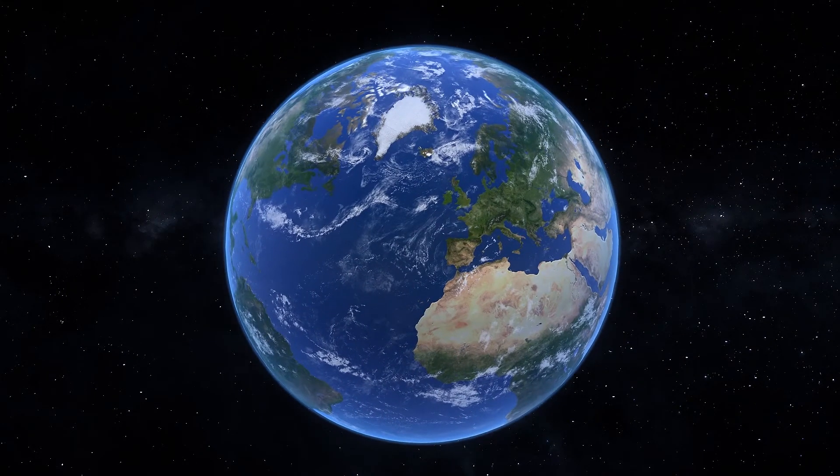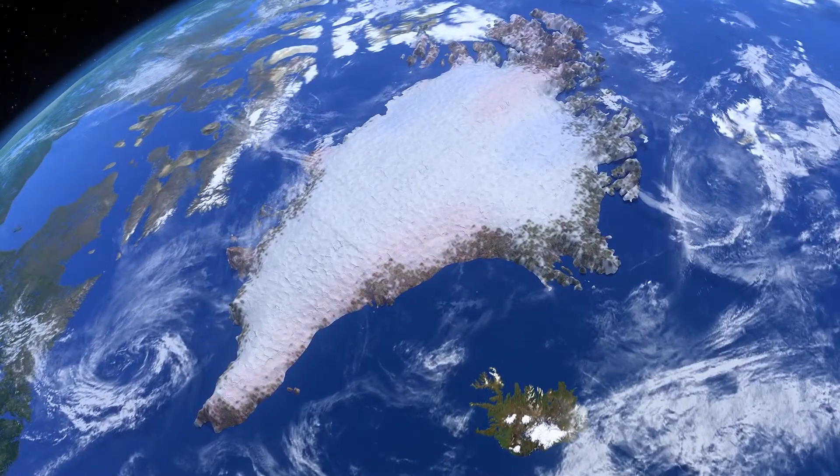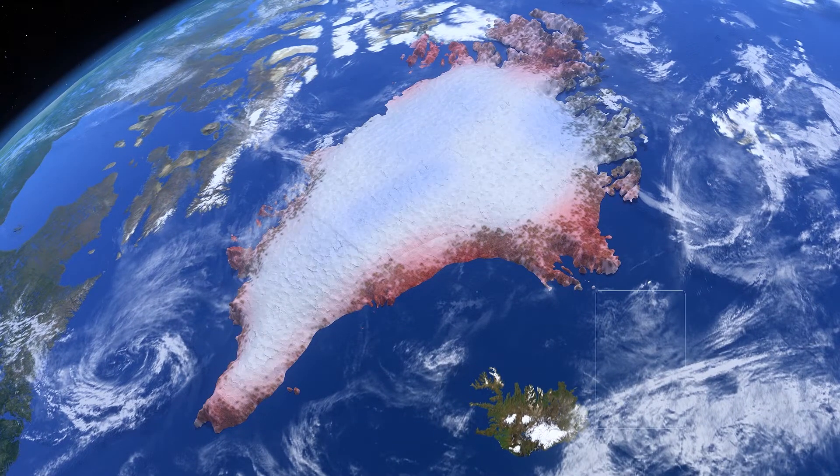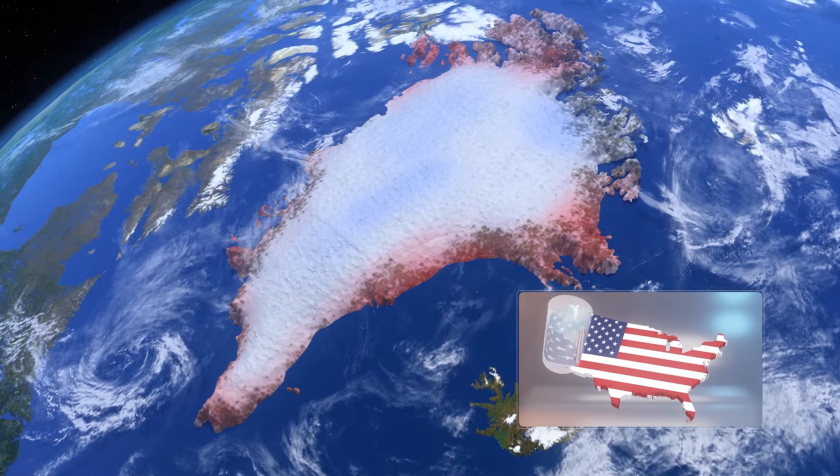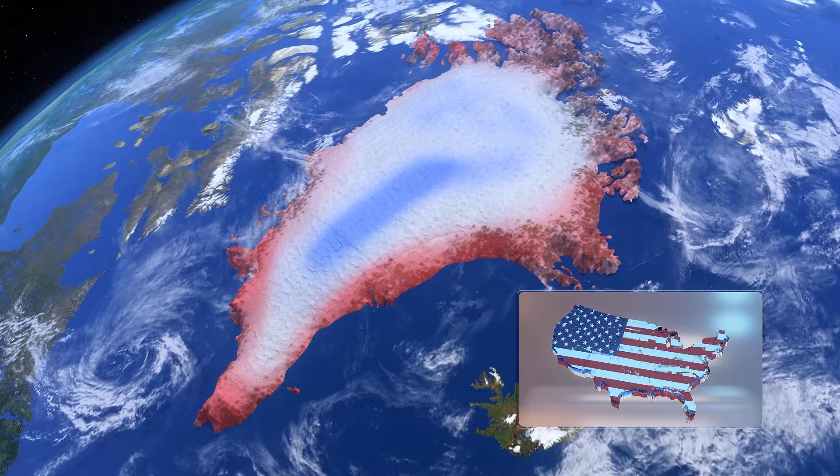Greenland's ice sheet has lost 4,700 gigatons of ice since 2002, enough to submerge the entire U.S. under half a meter of water, according to a Polar Portal study.